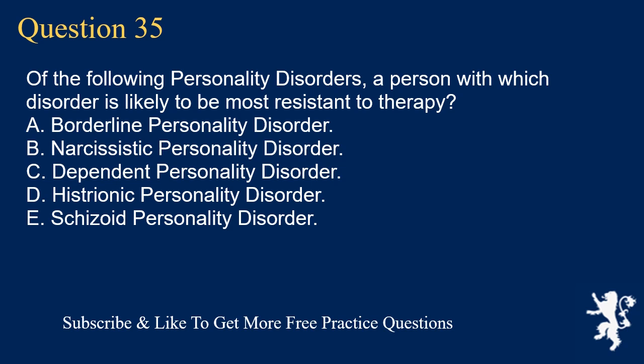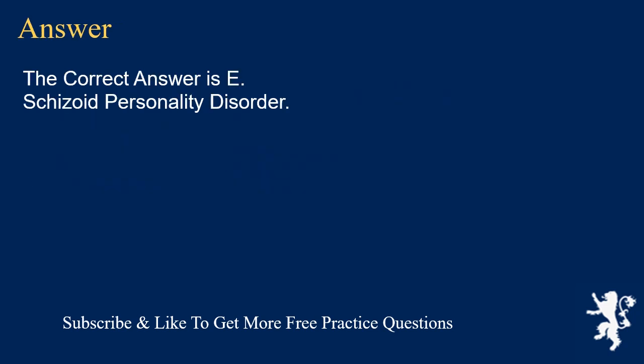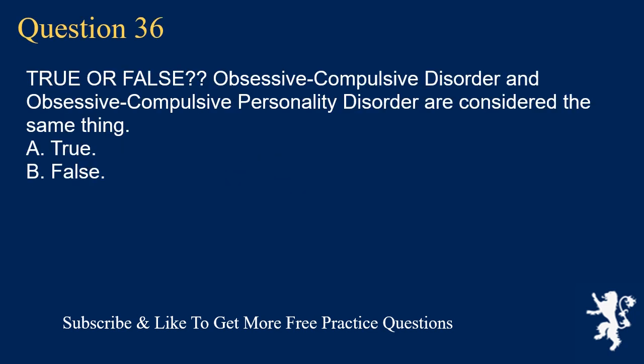Question 35. Of the following personality disorders, a person with which disorder is likely to be most resistant to therapy? A. Borderline Personality Disorder. B. Narcissistic Personality Disorder. C. Dependent Personality Disorder. D. Histrionic Personality Disorder. E. Schizoid Personality Disorder. The correct answer is E. Schizoid Personality Disorder.